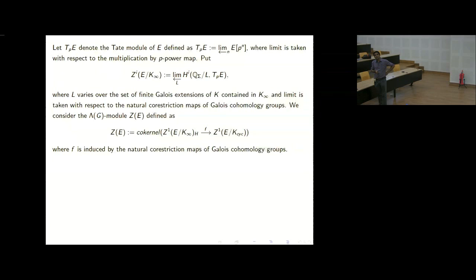Over any number field, I have the continuous cohomology group. I take the Tate module T_P(E) associated to the elliptic curve — the inverse limit of P-power torsion points of E with its Galois action — and then take the i-th cohomology group. I take the inverse limit under co-restriction maps, denoted Z^i, and then take the limit up to K_∞ or K_cyc over any algebraic extension. We have a co-restriction map from K_∞ to K_cyc, which factors through coinvariants by H, and the cokernel is denoted Z_E.